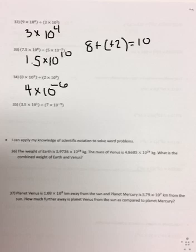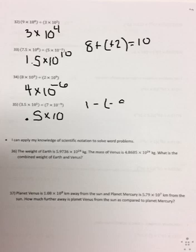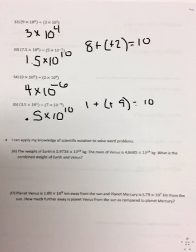Number thirty-five, I divide: 3.5 divided by 7 gives me 0.5. I subtract my exponents: 1 minus negative 9. Using keep-change-change, I keep the 1, change to addition, change to a positive 9, and get 10. But I have to move the decimal back one place to be in scientific notation, so my answer is 5 times 10 to the 9th power.